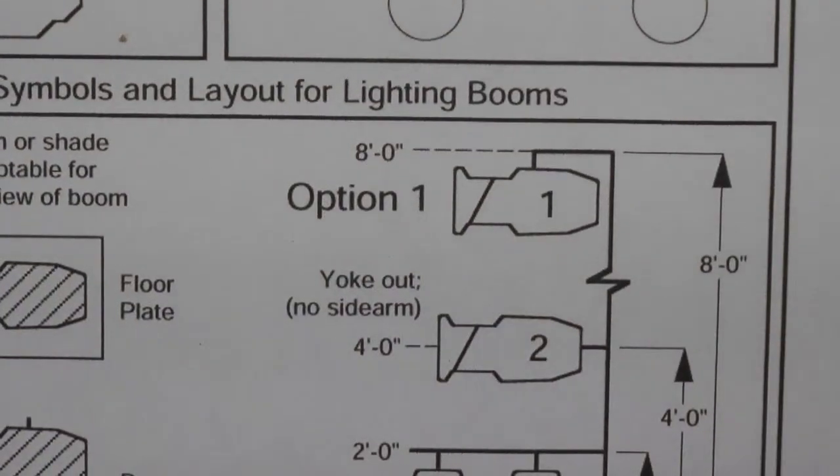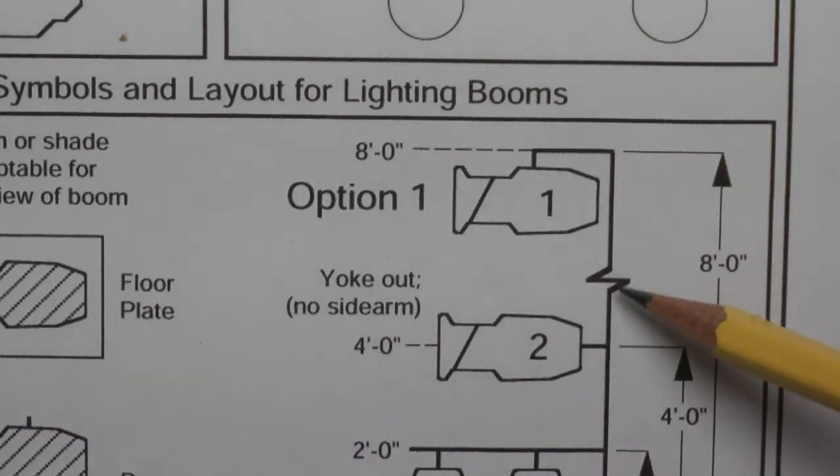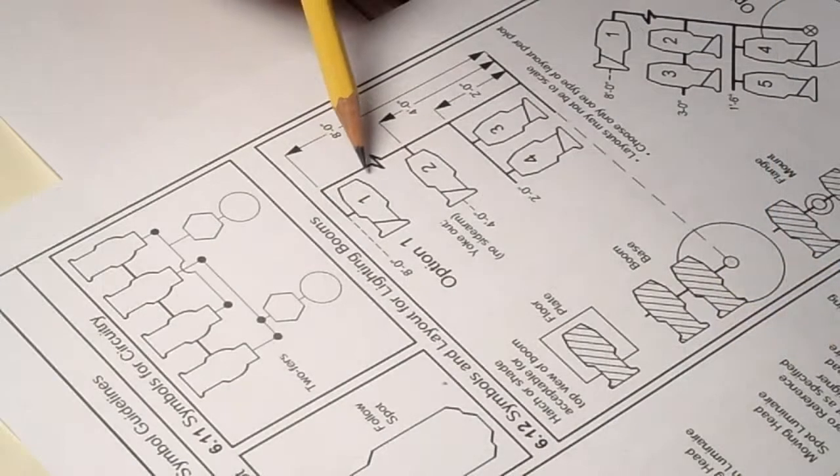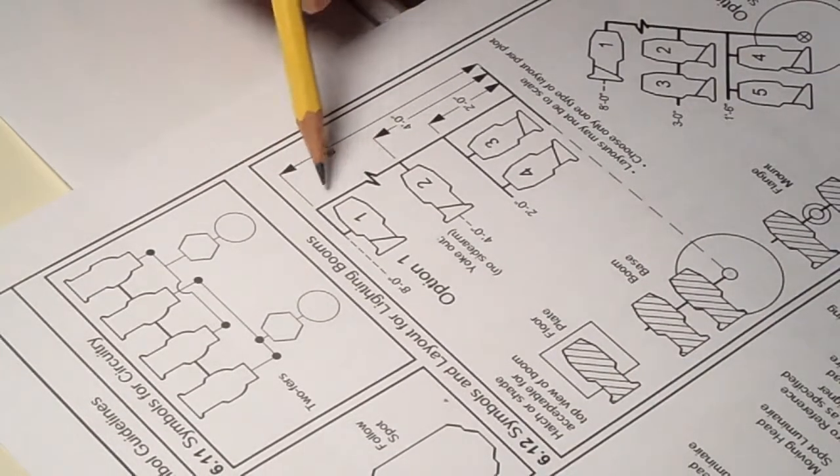If you don't have enough space to draw the entire pipe on your paper, this jagged line indicates that there's a break in the line. So as long as the dimension is there, you don't have to draw the full pipe.